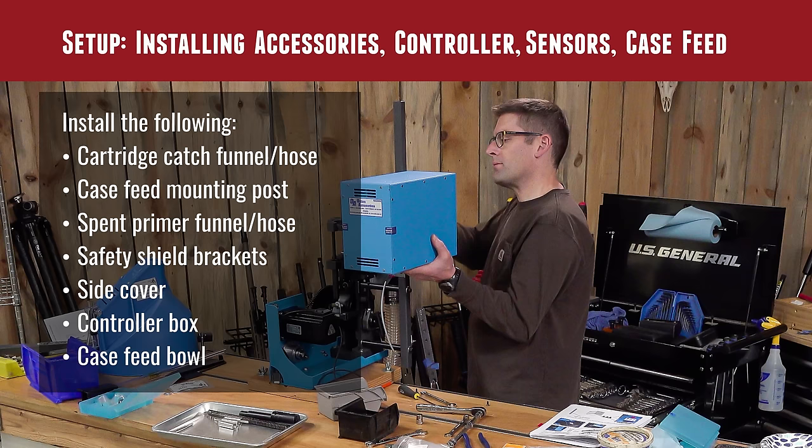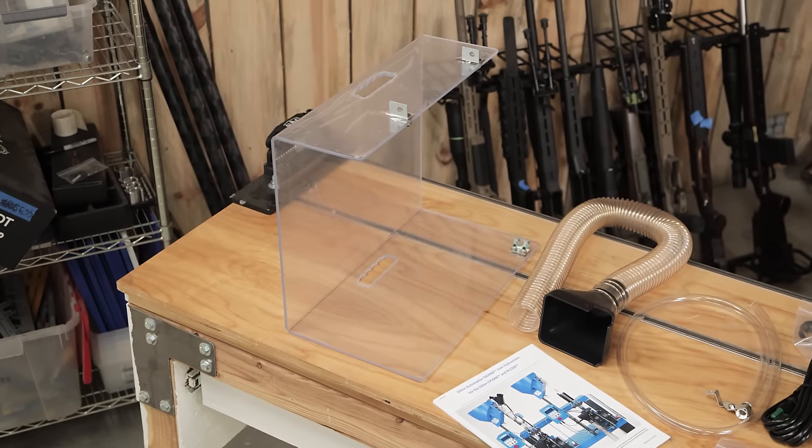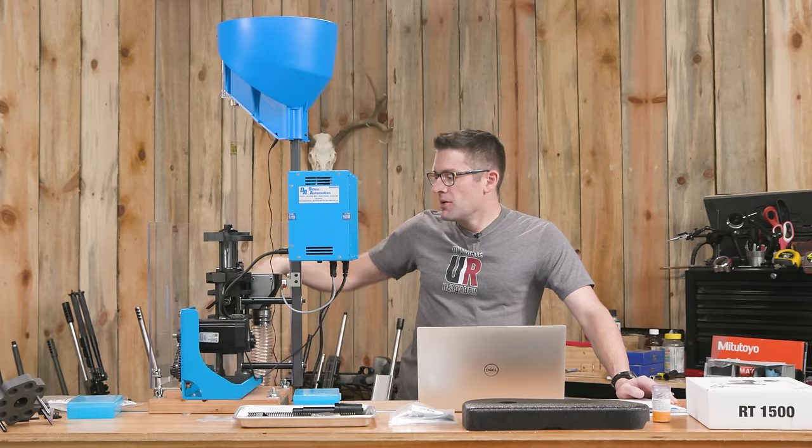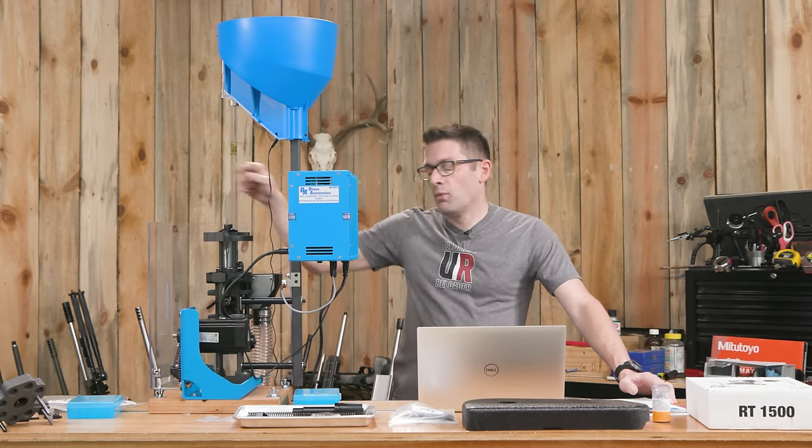Then we have the brackets for the safety shield, this clear plastic shield here. There's two on the case feed mounting pole in the post and then there's one on the other side. There's also a front bracket that supports it from the bottom. The entire shield is set down into place and there's a micro switch that senses that it is in place and that it's safe to run.